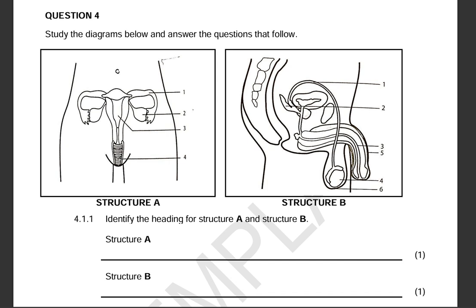What we have in front of us is two diagrams. It says: study the diagrams below and answer the questions that follow. We are given two diagrams labeled structure A and structure B. As I always say, when you are given diagrams you need to analyze them first before you even look at the questions. It's clear these diagrams are from the reproductive system — a Grade 9 topic. We have a female reproductive system diagram and a male reproductive system diagram. It is not a vagina and a penis — that is wrong.